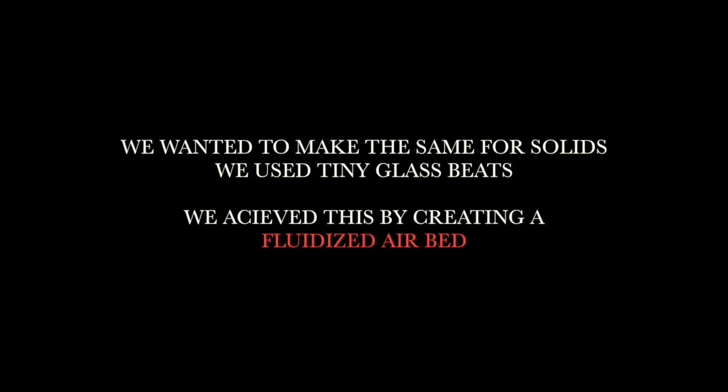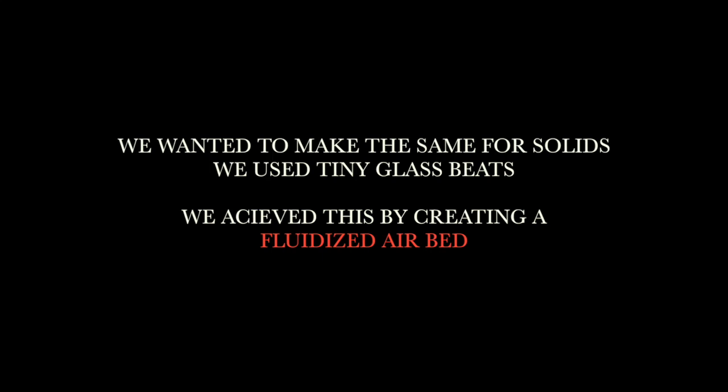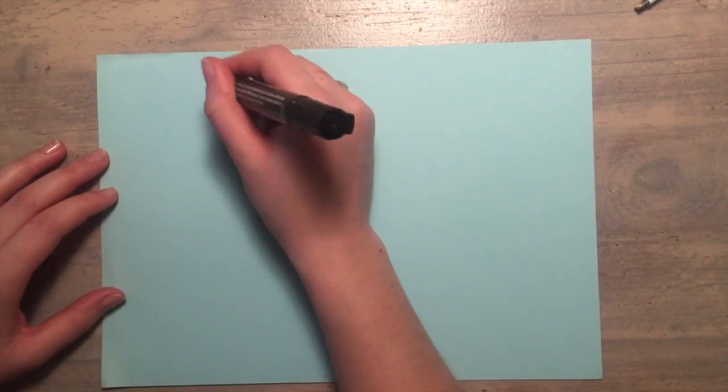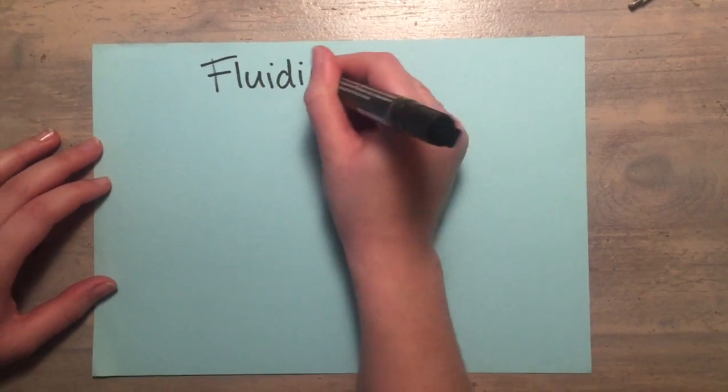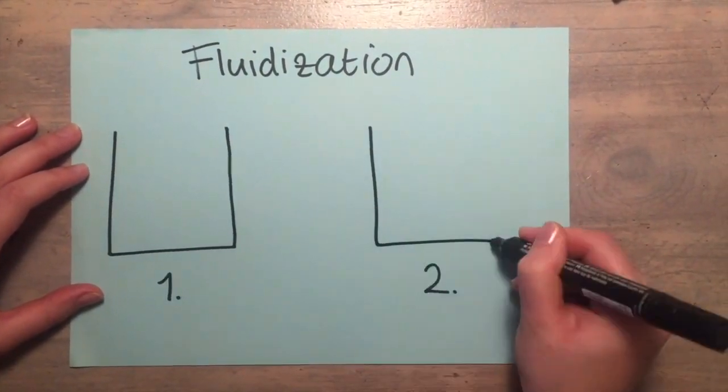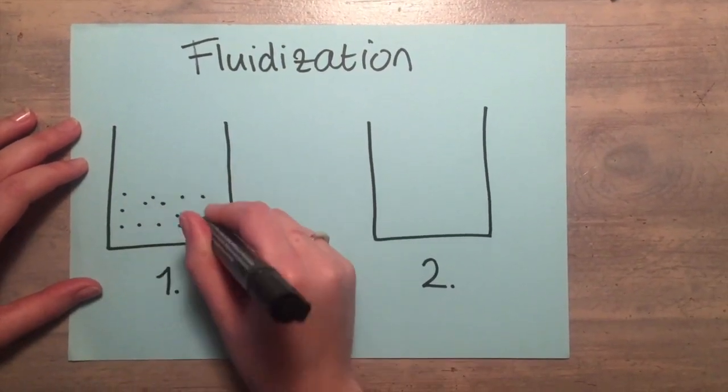Fluidization is a process whereby a granular material is converted from a static solid-like state to a dynamic fluid-like state. This process occurs when a fluid is passed up through the granular material, such as sand or in our case tiny glass beads.